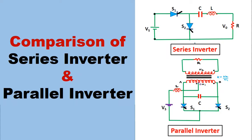This is the circuit diagram of series inverter. Here you can see the commutating components L and C are connected in series with the load, therefore it is called as series inverter. In the parallel inverter circuit, the commutating capacitor C is connected in parallel with the load, therefore it is called as parallel inverter.